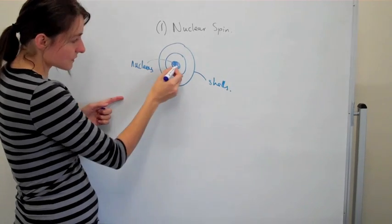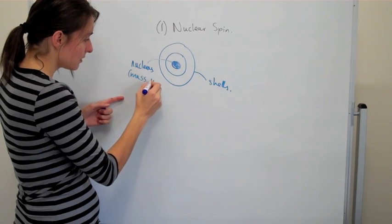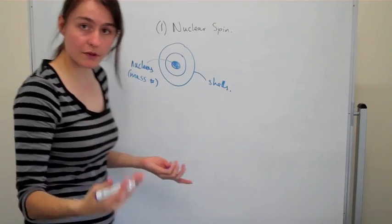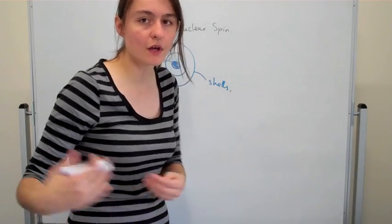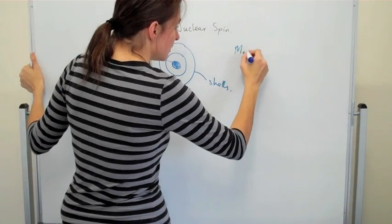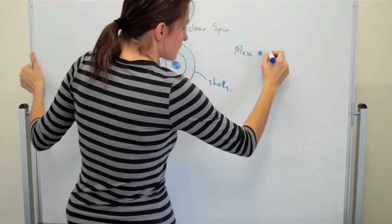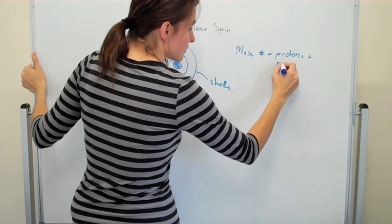Now the nucleus in the center there has a mass number. And if you remember what the mass number is, the mass number is basically the addition of the amount of protons you have plus neutrons. So mass number equals protons plus neutrons.